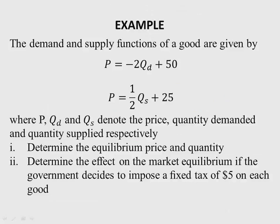Let's look at a numerical example. The demand and supply functions of a good are given by: P = -2Qd + 50 (demand) and P = ½Qs + 25 (supply), where P, Qd, and Qs denote the price, quantity demanded, and quantity supplied respectively. The questions are: (1) determine the equilibrium price and quantity, and (2) determine the effect on market equilibrium if the government imposes a fixed tax of five dollars on each good — remember, this fixed tax is the specific tax.